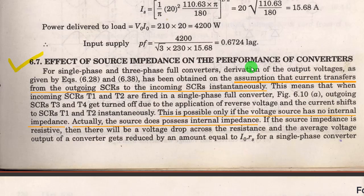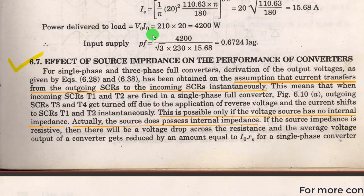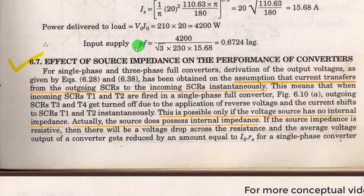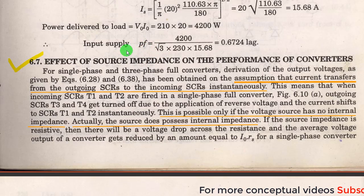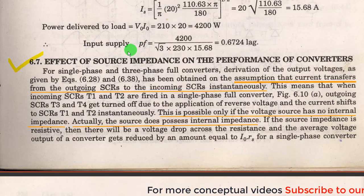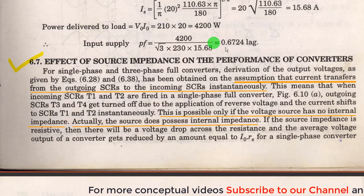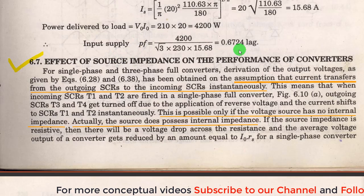But in those cases we did not consider something called the source impedance. We took the input to be the ideal one, but in reality in the source side there will be some impedance, and if it is so, how the behavior of the circuit changes — that we will understand in this video.